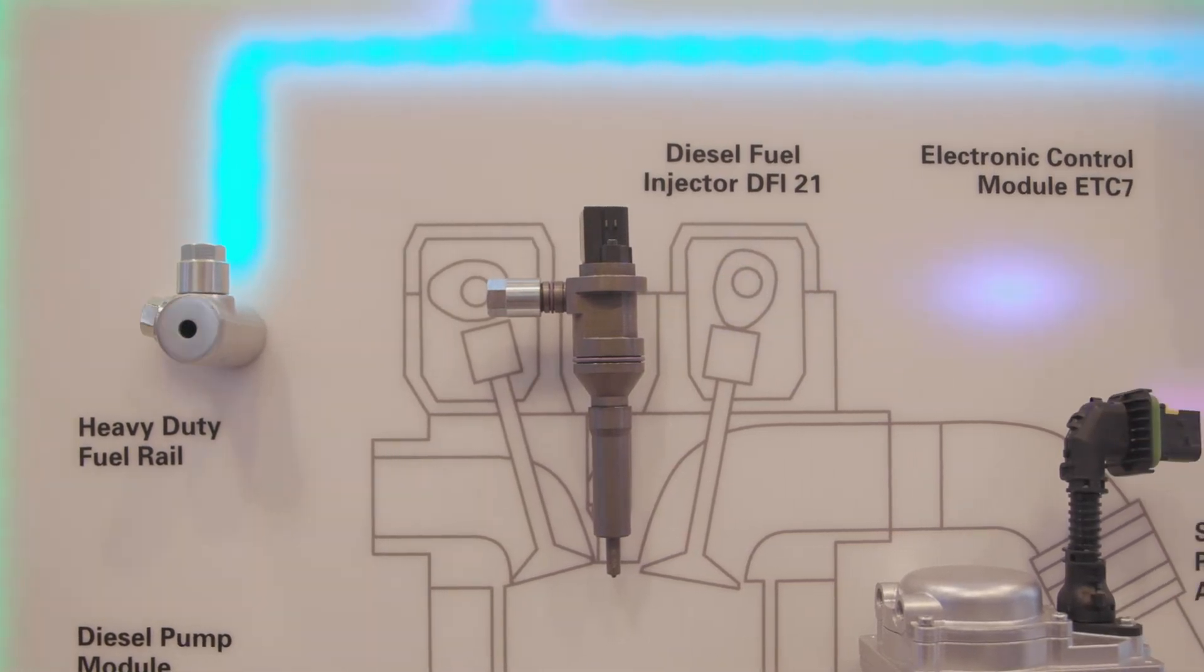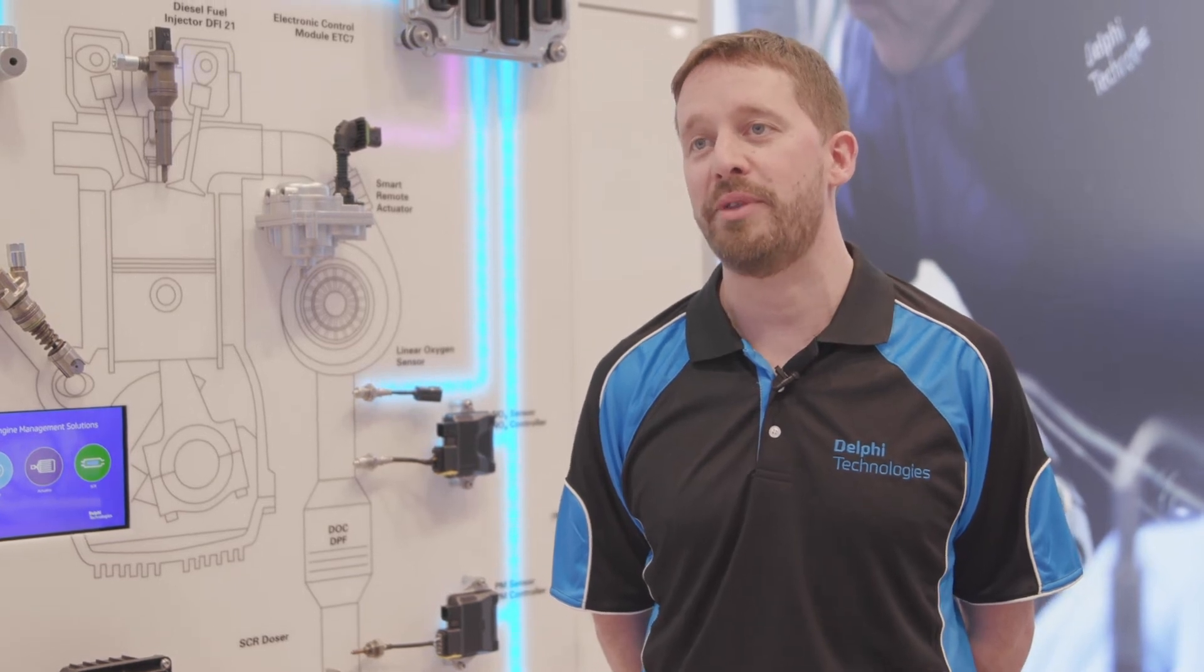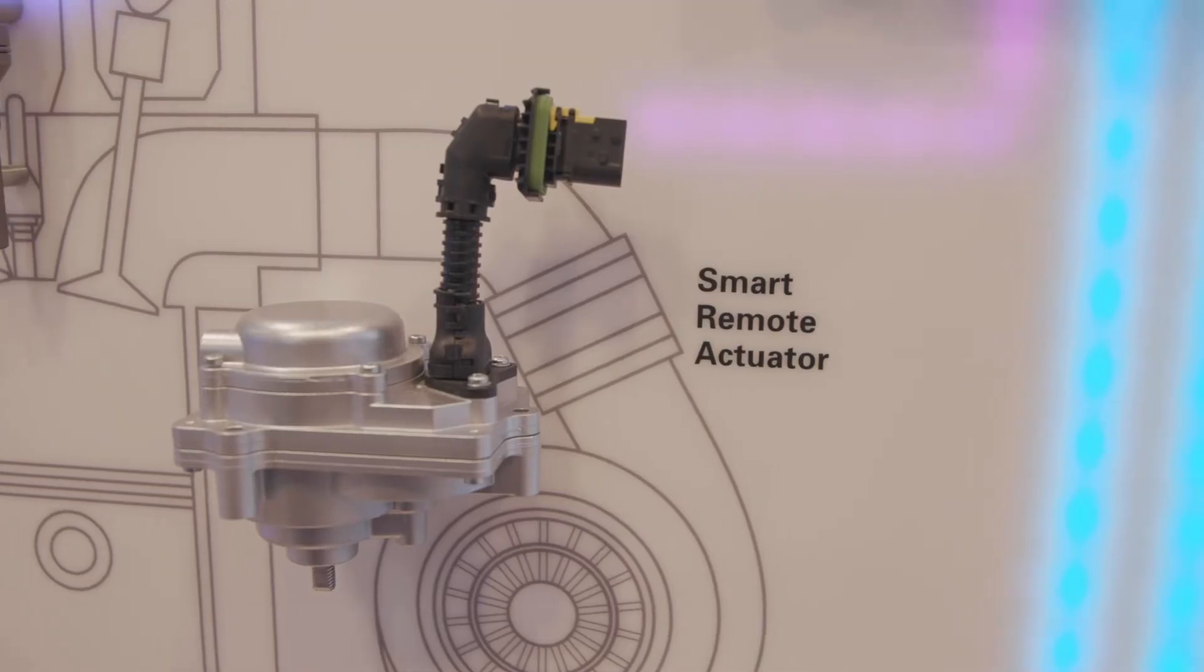To put that into perspective, the pressure at the bottom of the Marianas Trench is approximately 1000 bar, so we're talking about three times that pressure.